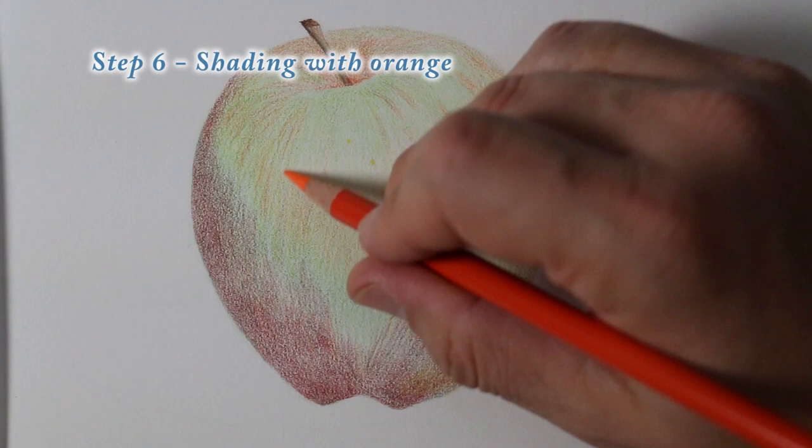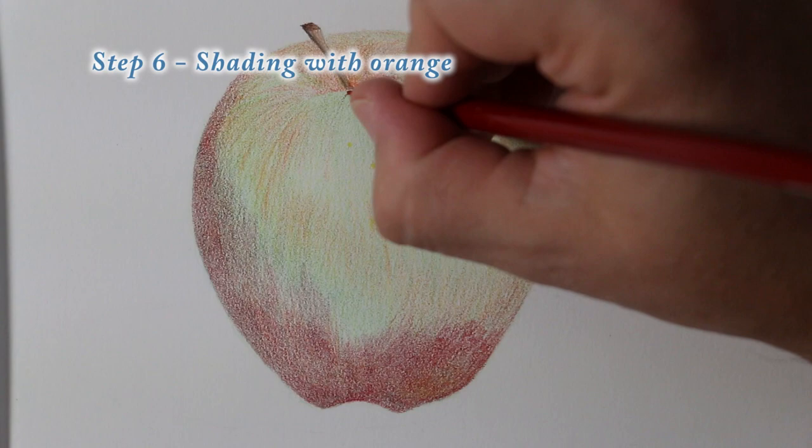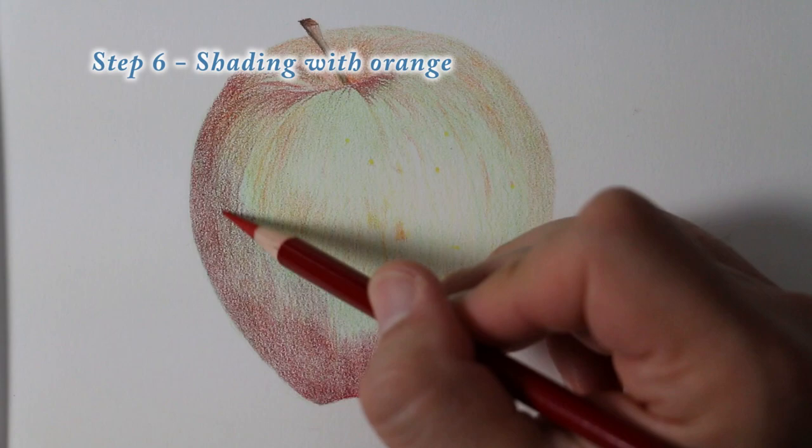So I also want to reserve part of that portion up there in the top right area for a highlight. I want to show that the light is reflected off of the skin of the apple and I want to do the same thing again on the back side of the stem where the stem is. I want to show a little bit of brightness back there.